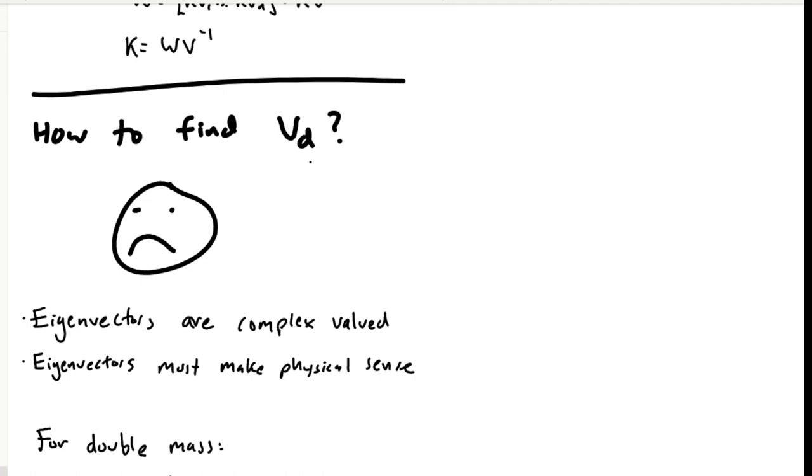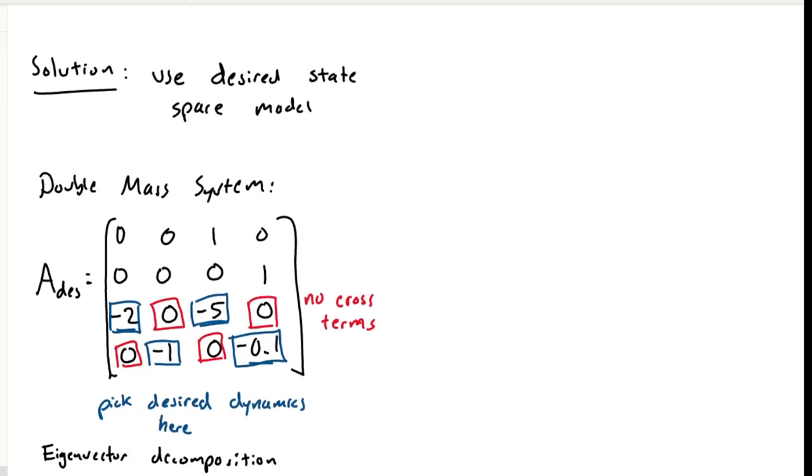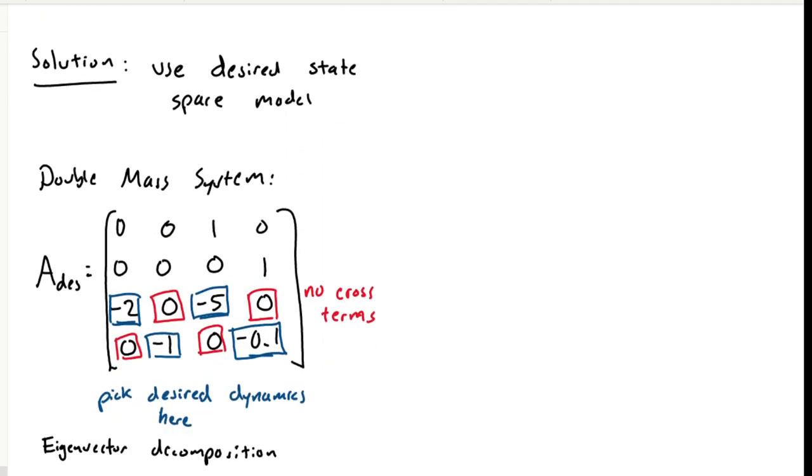So the final part of this video, I'm going to demonstrate a method for picking eigenvectors based on a desired A matrix, which will help us escape some of these difficulties with picking the eigenvectors. If we look at a state-space representation of a system, and imagine a form that we'd like it to be in, but that is still physically realizable, then we can use that state-space matrix to find our eigenvectors.